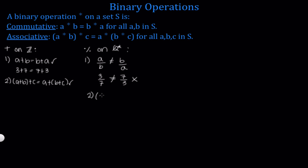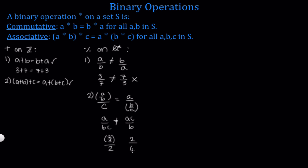In order for division to be associative, we would need (A divided by B) divided by C to equal A divided by (B divided by C). Simplifying, the left-hand side equals A divided by BC, and the right-hand side gives AC divided by B. These are clearly not equal. For a counter example: (2/3) divided by 2 on the left gives 4/3, while 2 divided by (3/2) on the right gives 1/3. Since 1/3 does not equal 4/3, division is not associative.